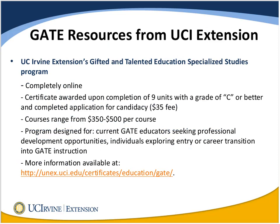Here is a brief overview of the GATE Specialized Studies Program at UC Irvine Extension. Our certificate program is fully online and consists of nine quarter units. Students may choose from a variety of electives with different unit values. Since the program is fully online, we are open to individuals in California as well as around the country and the world. Our program is taught by a team of experts and is designed for individuals new to the field as well as current GATE educators seeking professional development. To be eligible for certification, students must complete all nine units with a grade of C or better and a completed application for candidacy. Courses range from $350 to $500 per course depending on unit value, and you may take individual courses without pursuing the entire certificate.